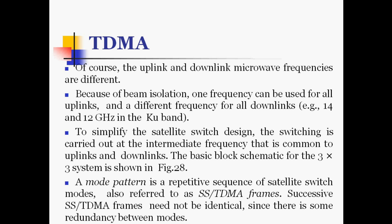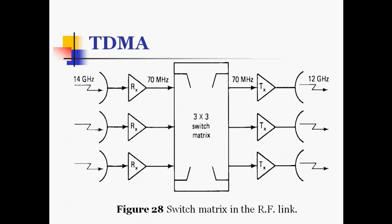The mode pattern is a repetitive sequence of satellite switch modes, also referred to as the satellite switch TDMA frame. Successive satellite switch TDMA frames need not be identical since there is some redundancy between the modes. The 3×3 switch matrix for Ku-band uses 14 GHz at the receiver and 12 GHz for the downlink transmitter antennas. With this switch matrix, any receiving antenna can be connected to any transmitting antenna at the satellite.